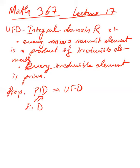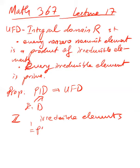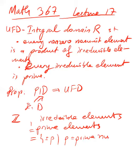The basic example is the integers. If R is the integers, then the irreducible elements are the prime elements — that is, plus or minus p, where p is a prime number in the sense we know from before.